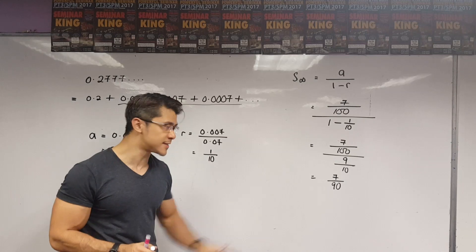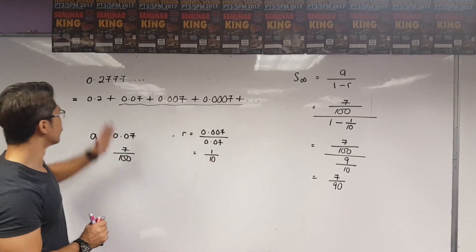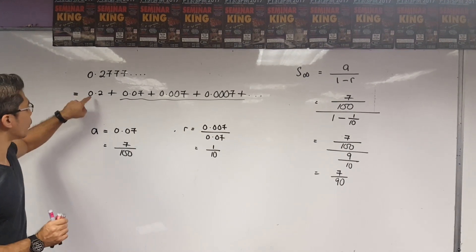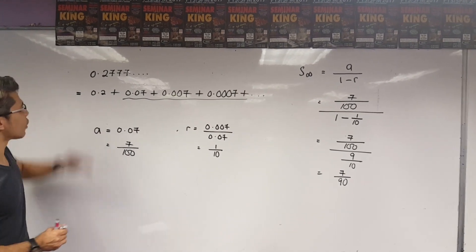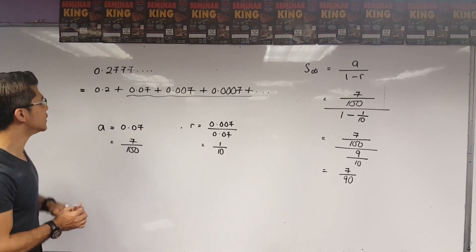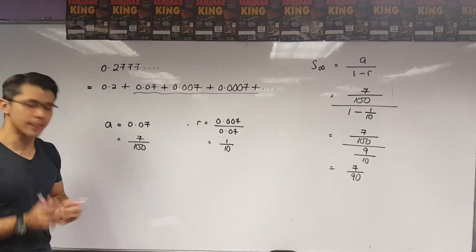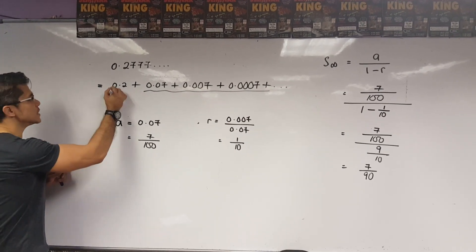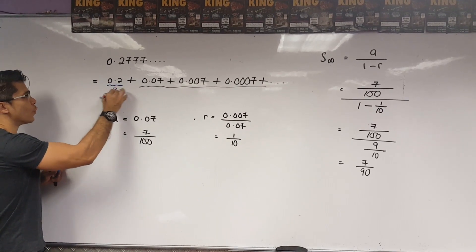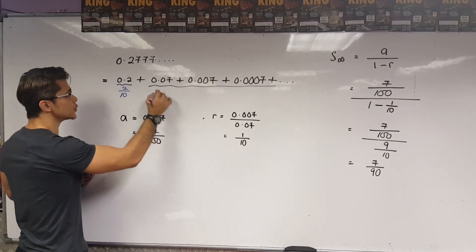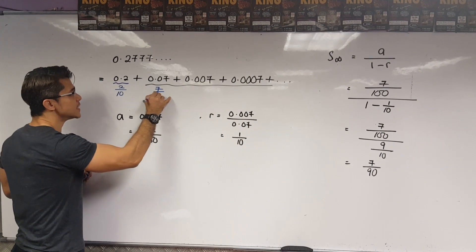Now, please don't forget, 7 over 90 is just from this part up to the end. We have a 0.2 right in front here. So, to convert 0.2777 onwards into a fraction, I need to consider 0.2. Now, if I convert 0.2 into a fraction, this means I get this to be 2 over 10.